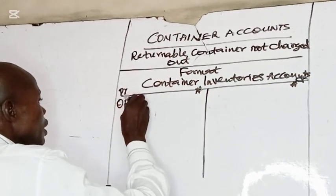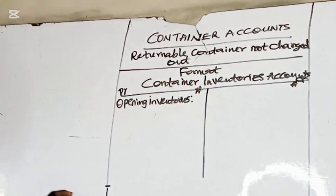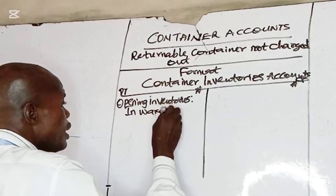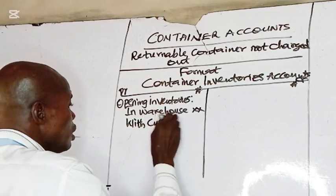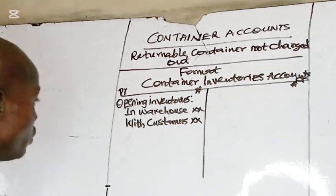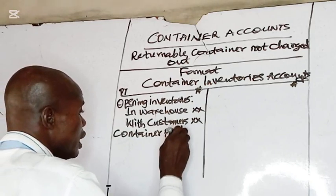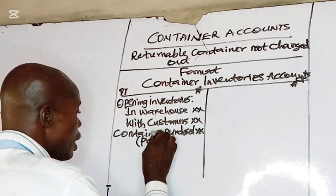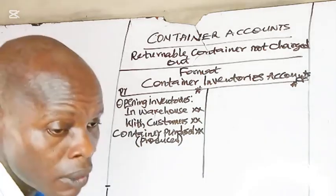On the debit side, you start with the opening inventory — both the one in warehouse and the one with customers. Then you debit containers purchased, where the products are bought, or containers produced, where the products are manufactured by the firm.